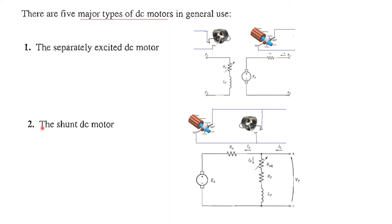The second type is the shunt DC motor. Shunt means parallel, so the field is in parallel with the rotor or armature. The field circuit is in shunt or parallel with the armature circuit.